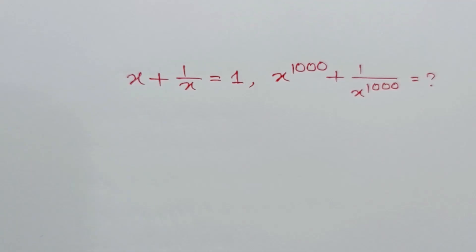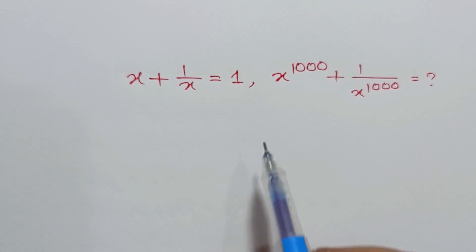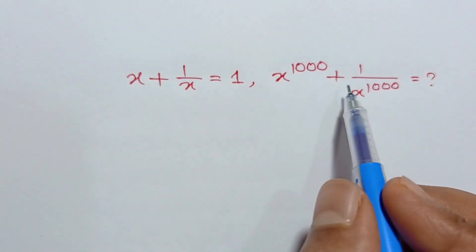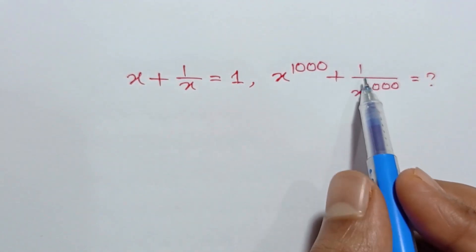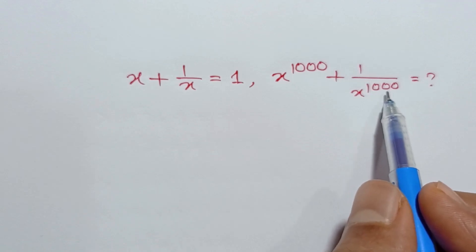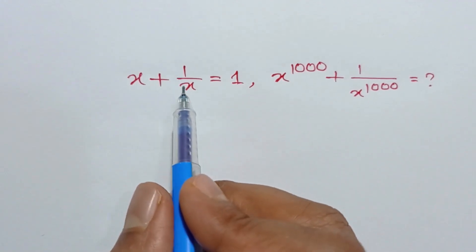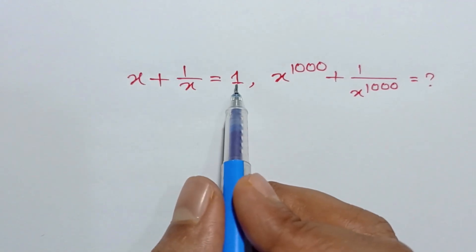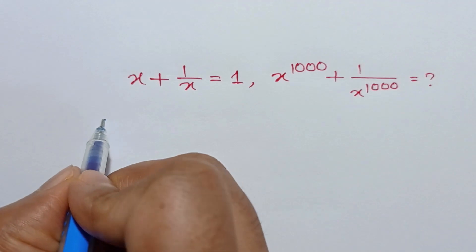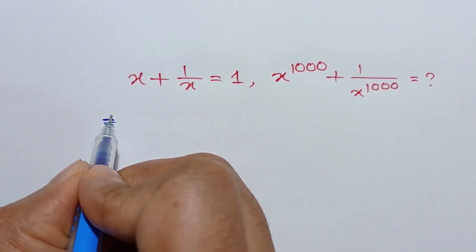Hi everyone. In this video I am going to show how to find the value of x to the power 1000 plus 1 over x to the power 1000, when x plus 1 over x is equal to 1.